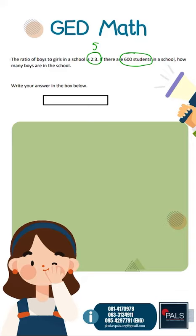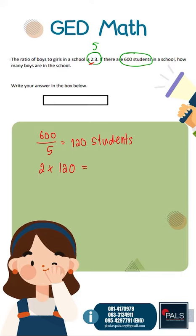So it will be 600 over 5. 600 over 5 is 120. So 1 ratio unit equals 120 students. So how many boys? Boys is 2 in the ratio, so 2 times 120 is 240 boys in the school.